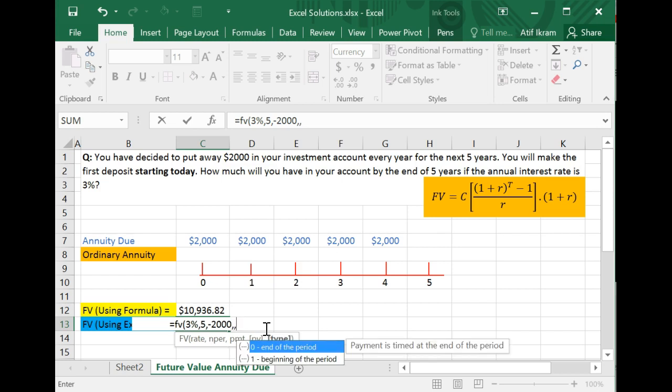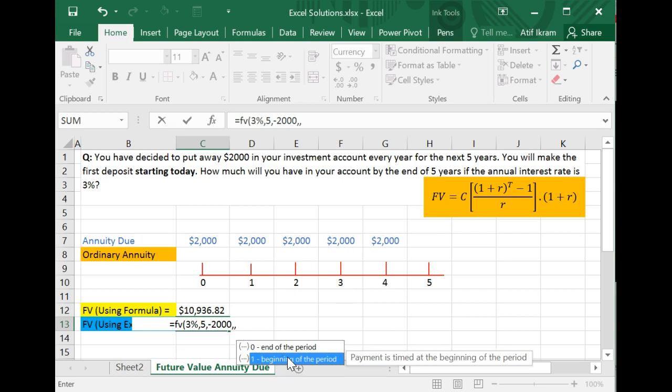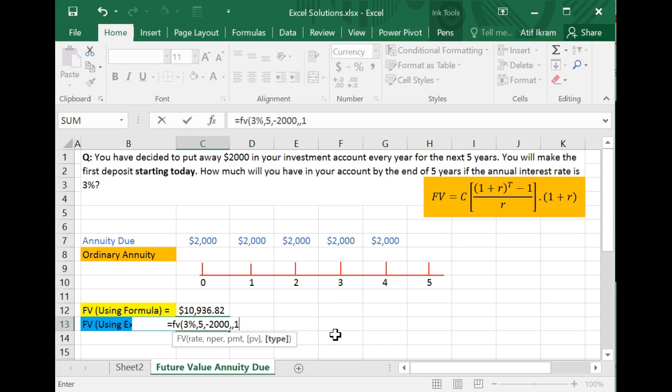Now here is the important part. At the end, Excel asks you, are these payments occurring at the end of the period or at the beginning of the period? And we know that because this is an annuity due, all these payments are happening at the beginning of each period, the beginning of year one, beginning of year two, beginning of year three, beginning of year four, beginning of year five. And so this is very important. You need to go here and basically tell Excel, Excel, it's the beginning of each time period.